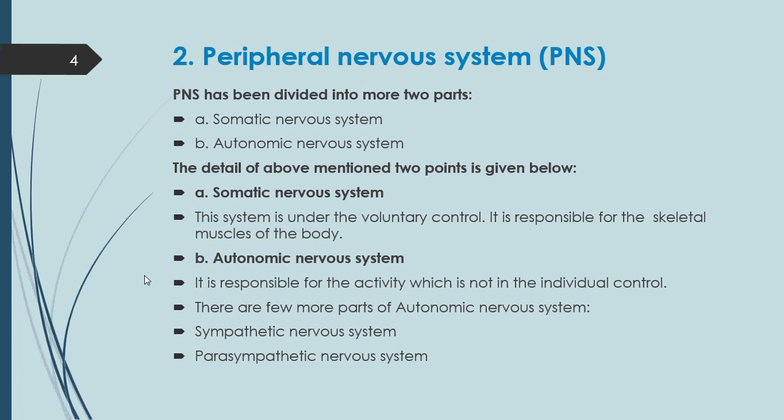Number two is the Autonomic Nervous System. It is responsible for activities which are not under individual control — that is, involuntary control. Every activity that the human body performs automatically, without the person's conscious control, is governed by the Autonomic Nervous System.